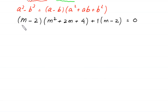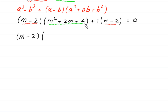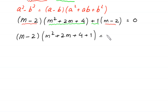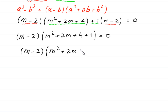Now, as you can see, this expression m minus 2 is a common factor. So we factor out (m minus 2). In bracket left: m squared plus 2m plus 4, and this plus 1. So m squared plus 2m plus 4 plus 1 is equal to 0. Next, (m minus 2) times (m squared plus 2m plus 5) is equal to 0.